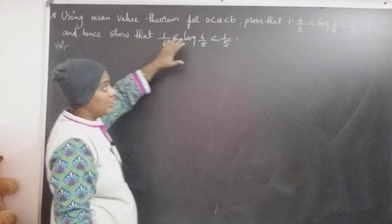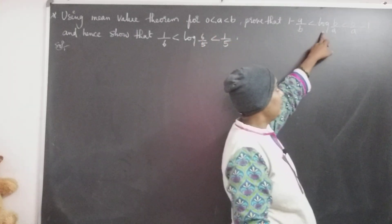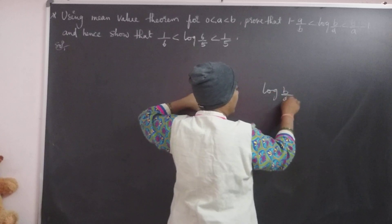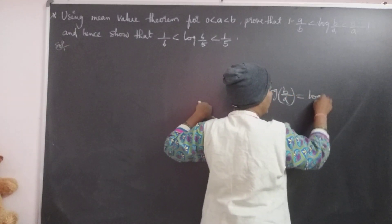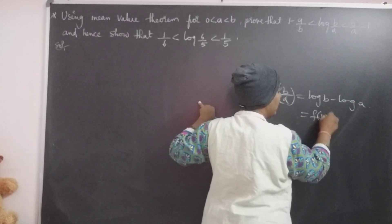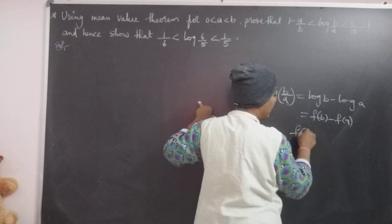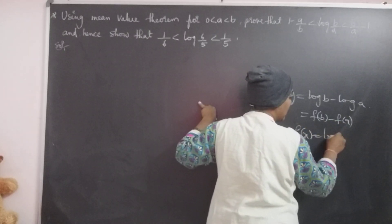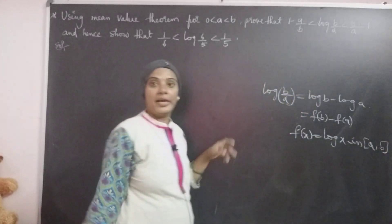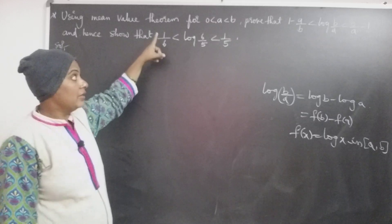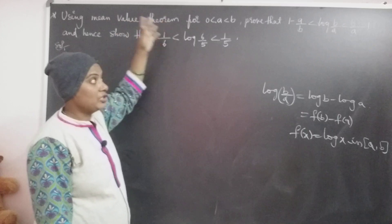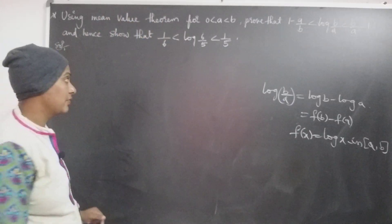Observing the given relation, log(b/a) is, by logarithmic rules, log b minus log a, which is nothing but f(b) minus f(a). Clearly the function f(x) = log x, defined in the interval [a, b]. This is the idea about the given problem — how we can find out the function and the interval in which it is defined.